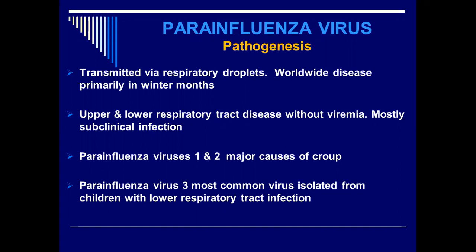Sometimes, if the immunity is competent enough, there is subclinical infection and the individual becomes a carrier, and the immunity process has already started in the body. Parainfluenza virus types 1 and 2 are the major group and they cause the major disease — croup — characterized by tracheitis, laryngitis, and bronchitis. There is a characteristic barking cough.